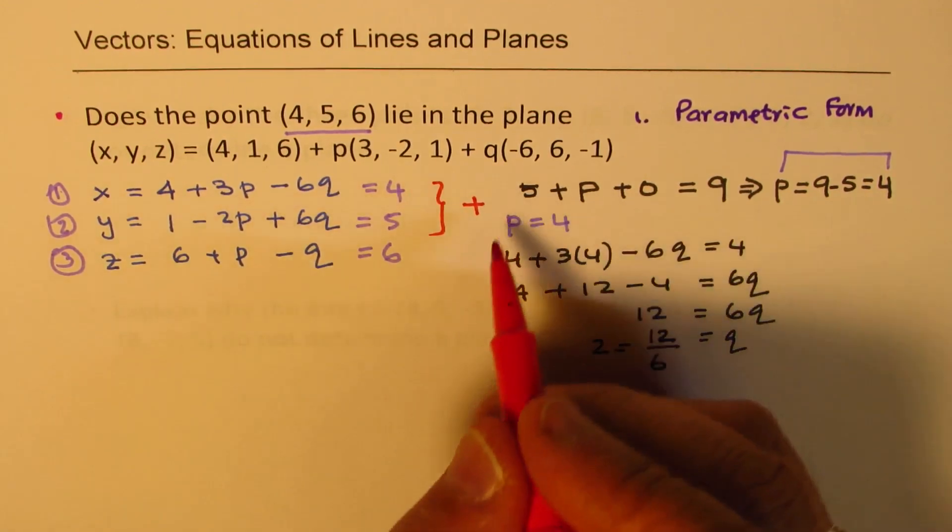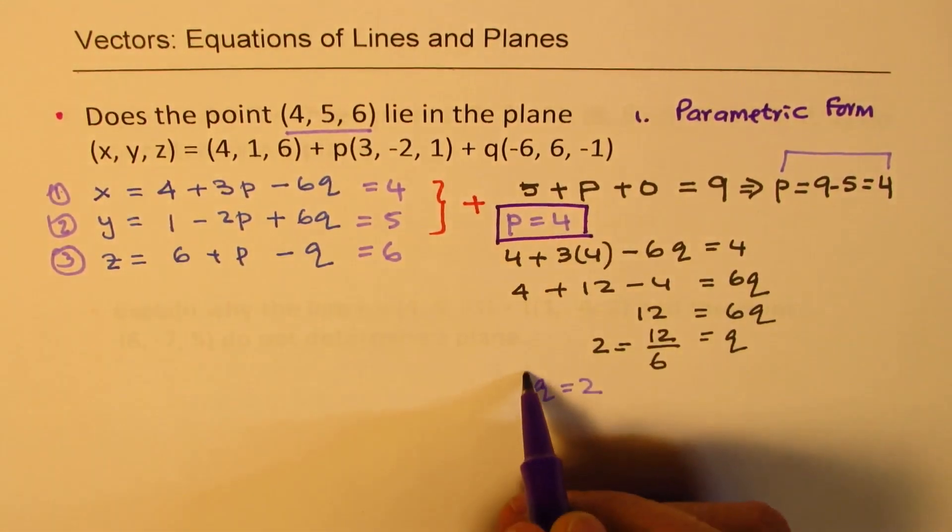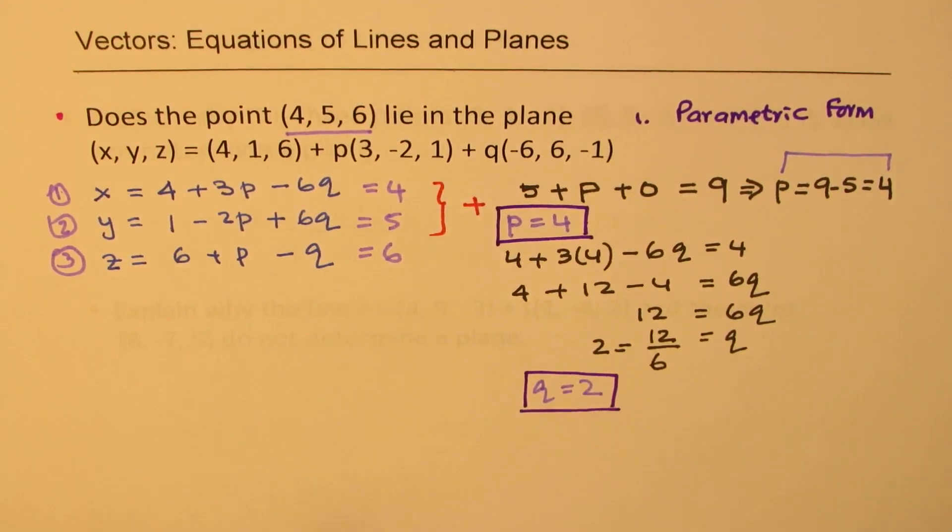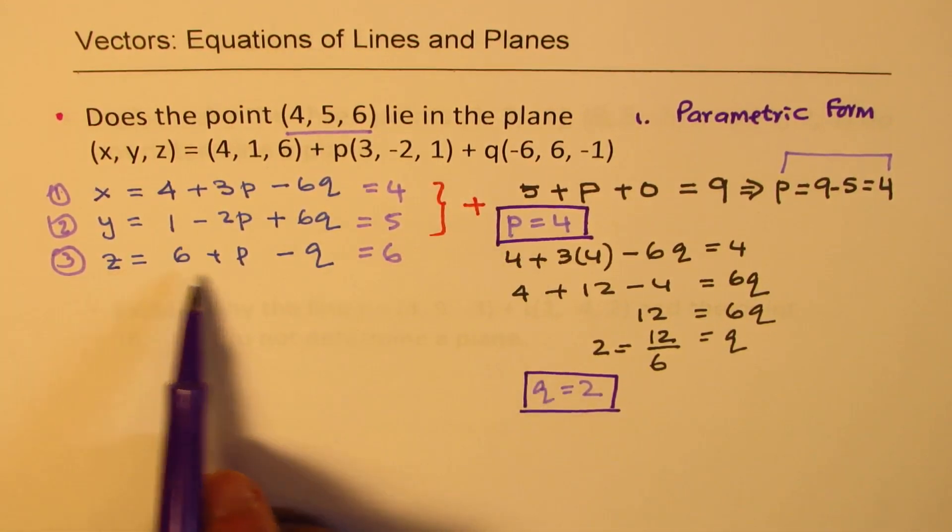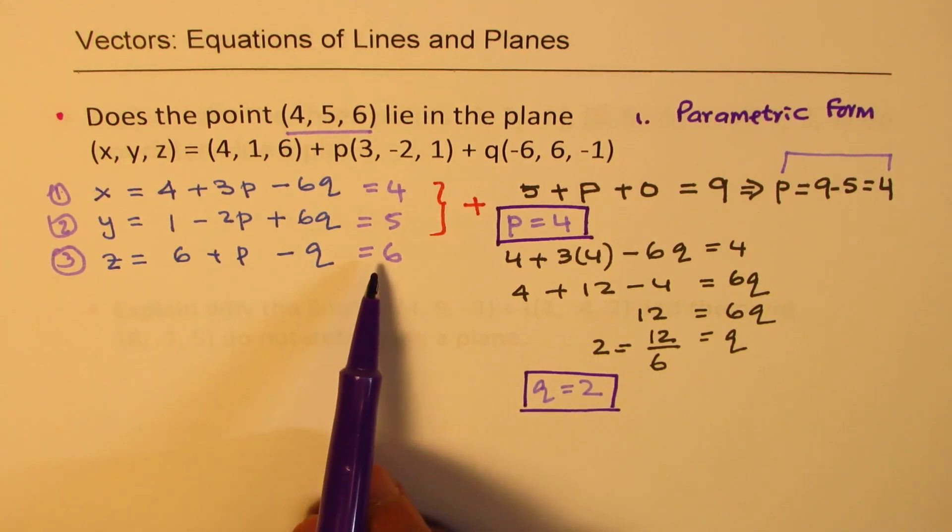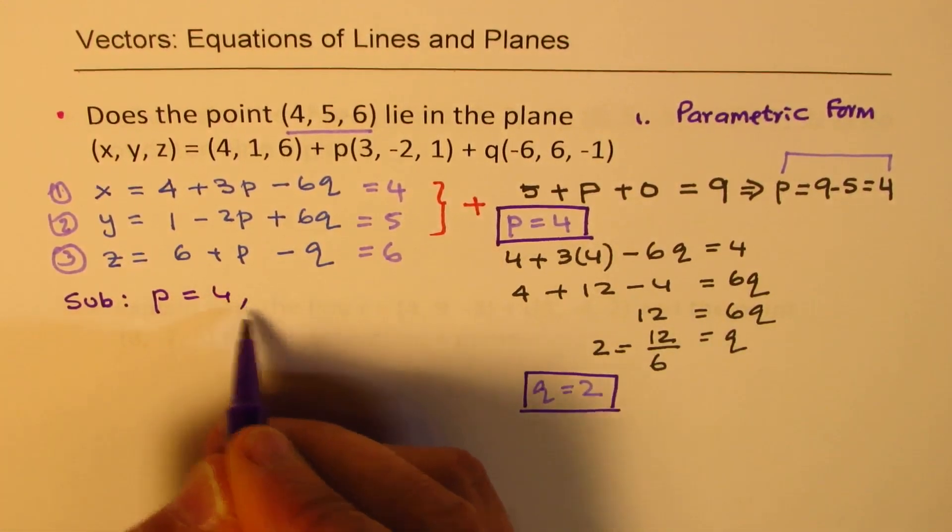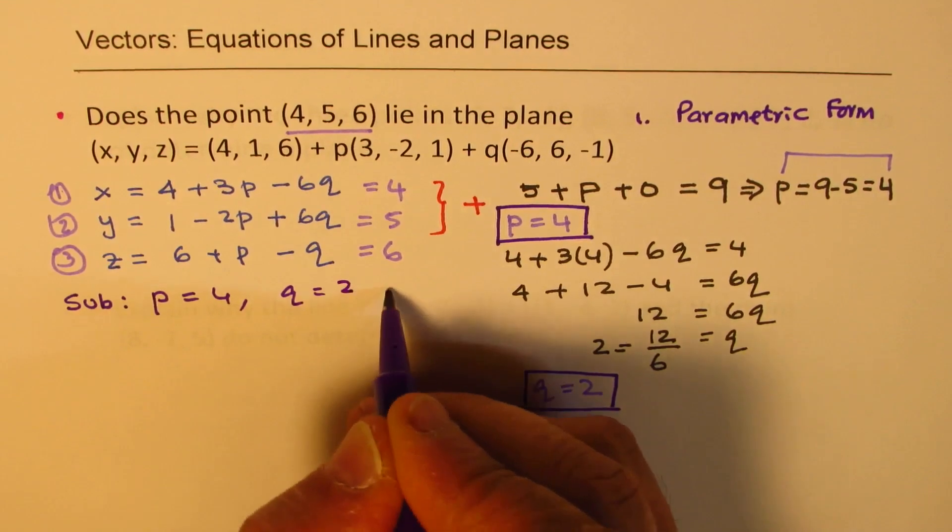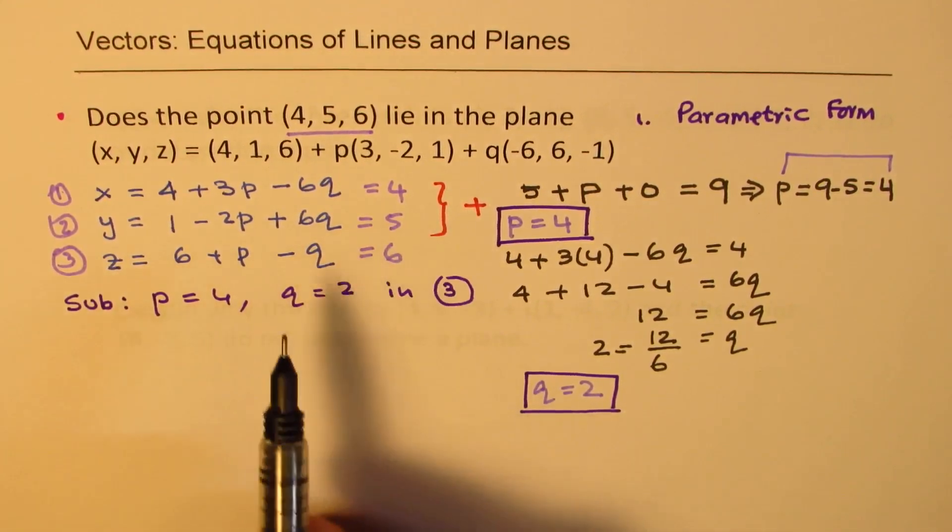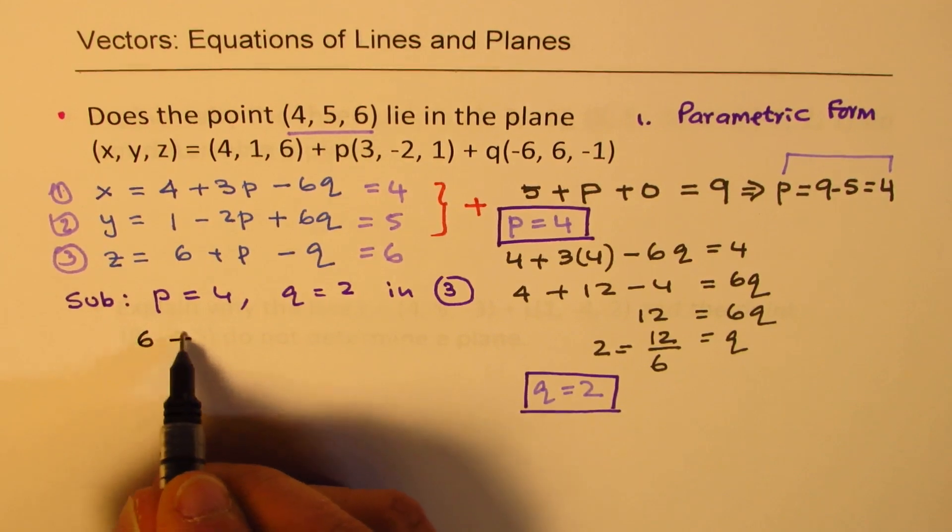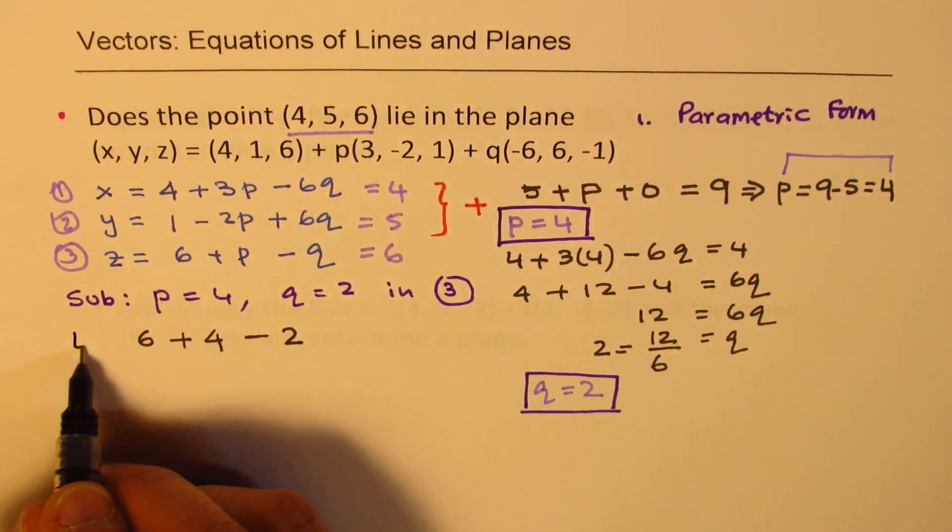So from these two equations, we have found that the value for p is 4 and the value for q is 2. Now if this point lies on the given plane, then substituting these two values in the third equation should satisfy the equation. So let's substitute. So we will now sub p equals to 4 and q equals to 2 in our equation number 3.